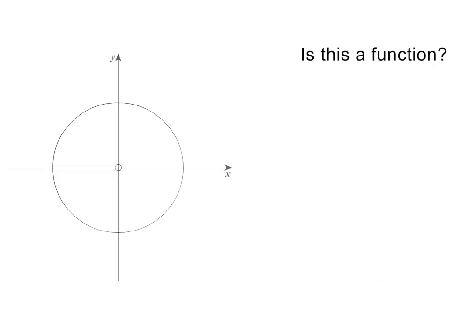Next we are given the graph of a circle. Is it a function? To check, let's again use the vertical line test. Moving the ruler across the graph, it will clearly cut the graph more than once. The circle is therefore not a function.